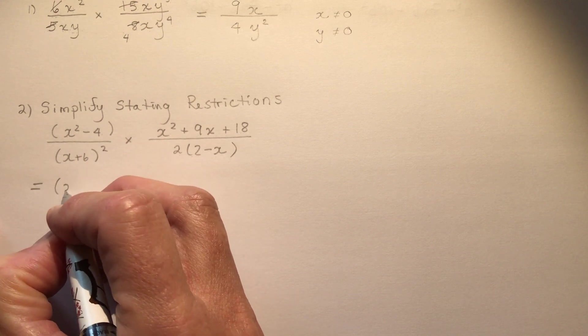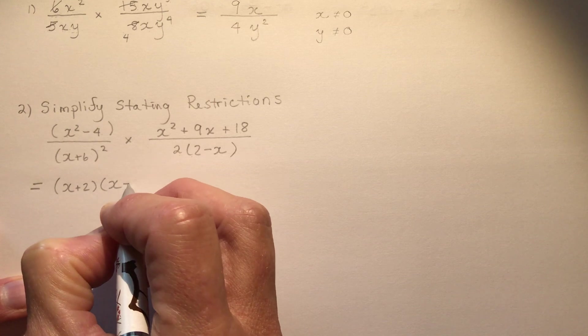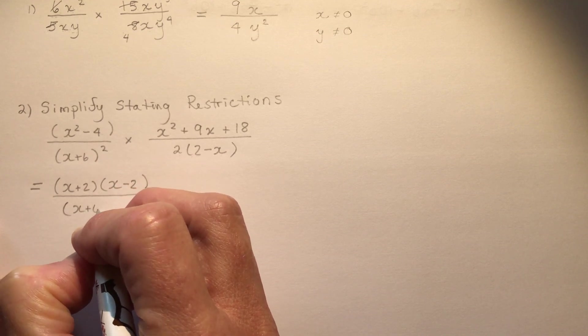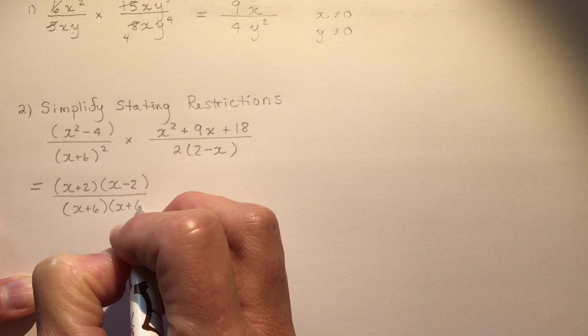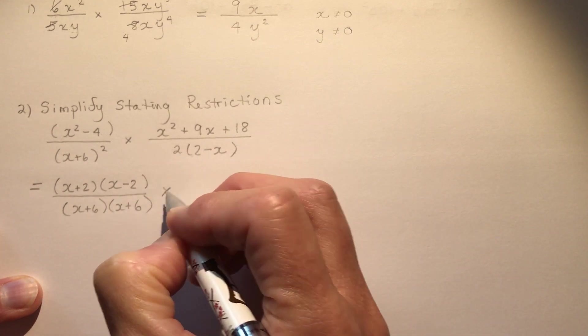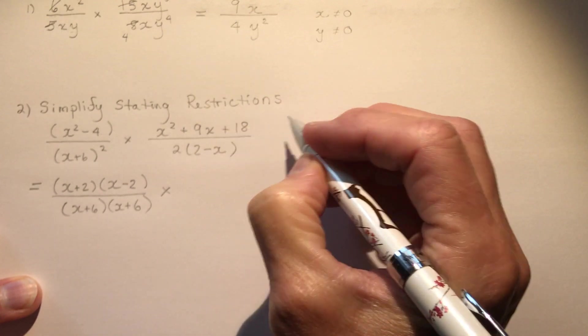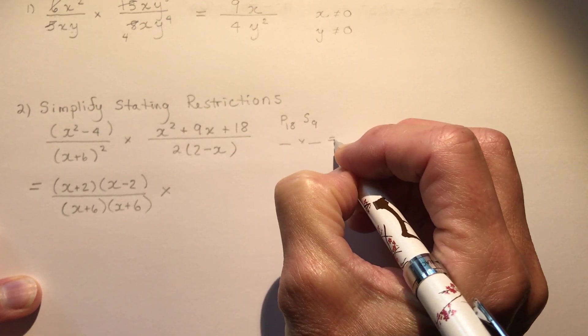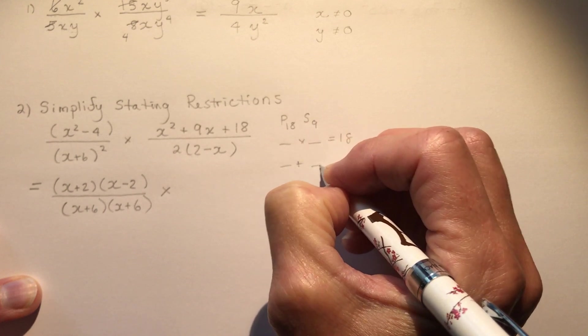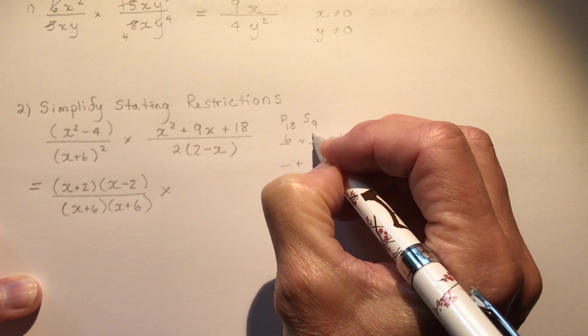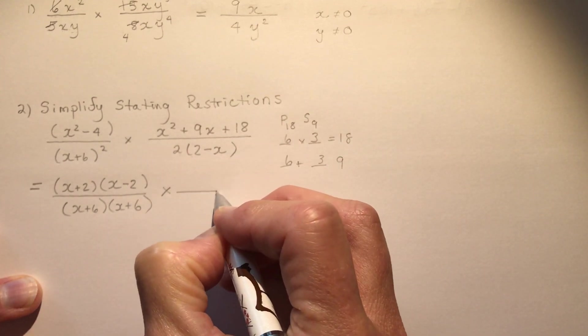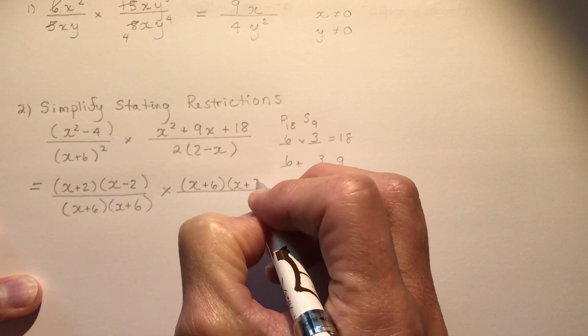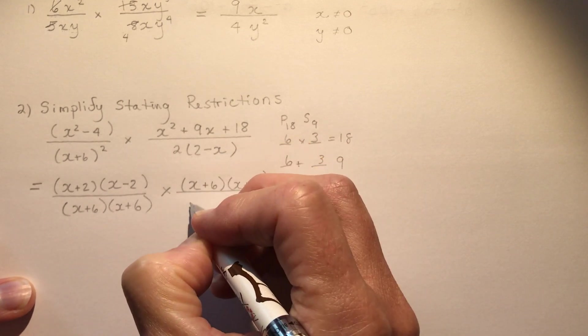x squared minus 4, that's the same as x plus 2 times x minus 2. And in the denominator I have x plus 6, I'm going to write this out twice. And on this side I'm looking for a product of the first and the last. So I need a product of 18 and a sum of 9. Two numbers that multiply to give me 18, the same two numbers to give me 9. You should think right away 6 and 3. Because it's a simple trinomial, that means I just need an x in the first position and I just plug in my numbers. You can always double check.